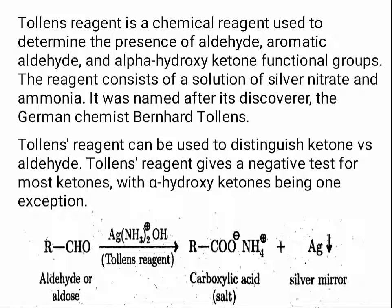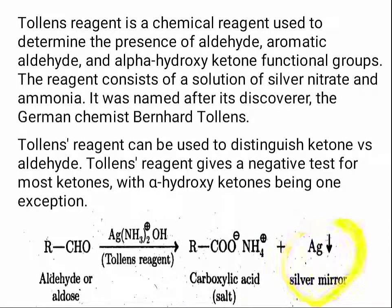Alpha-hydroxy ketones are one exception to the negative ketone test. In the case of aldehydes and alpha-hydroxy ketones, Tollens' reagent will give a positive test. If you take an aldehyde and add some Tollens' reagent, you will get a carboxylic acid and a silver mirror, by which you can determine a positive test. You can see this silver mirror.